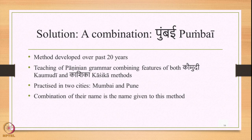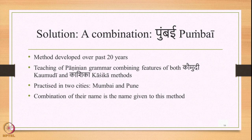In such a scenario, a solution is provided in which we combine both these methods — a method called Pumbai. This method is developed over more than 20 years of teaching, wherein teaching of Paninian Grammar combines the features of both the Kaumudi method as well as the Kashika method. This particular method was practiced in two cities — Mumbai and Pune — and a combination of these two names is also the name of this particular method, highlighting the combination of both methods.